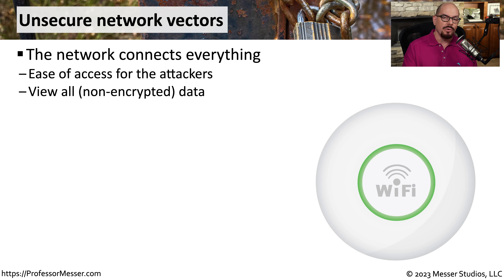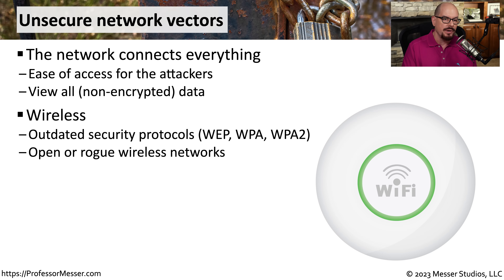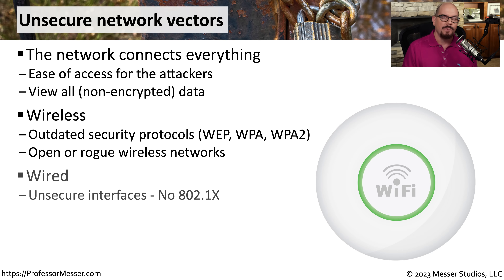Attackers know that your own network creates a digital highway that allows them to move very freely between all the systems within your network, and they take advantage of vulnerabilities built into the networking infrastructure. For example, if you have a wireless infrastructure, you need to make sure you're using all the latest security protocols. If you're using WEP, WPA, or WPA2, you may want to consider updating to the latest WPA3 protocol. Many organizations perform periodic scans of their network to check for open or rogue wireless access points. For both wired and wireless networks, it's usually a good idea to enable 802.1x, an authentication protocol that prevents anyone from gaining access to the network without proper credentials.